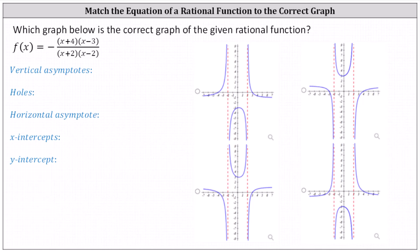Which of the following is the correct graph of the given rational function? We have f of x equals the opposite of the quotient of the product of x plus four and x minus three, and the product of x plus two and x minus two.